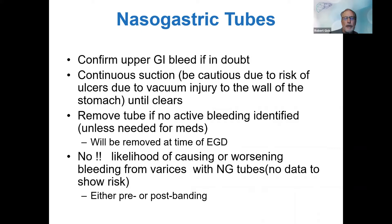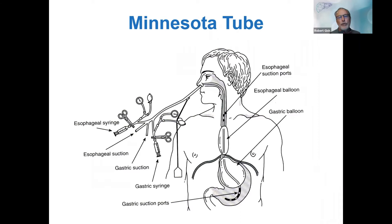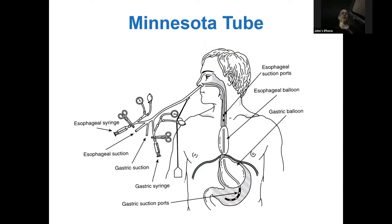NG tubes are standard of care in GI bleeders, but everyone still puts out the fake news that somehow these NG tubes are dangerous — that they'll lacerate a varix or knock off a band. People come up with any reason not to put an NG tube in. Patients don't like them, but these are part of managing patients. Minnesota tubes or Sengstaken-Blakemore tubes are rarely used. The last one I put in was in fellowship, and we only used the gastric balloon — not the esophageal balloon.